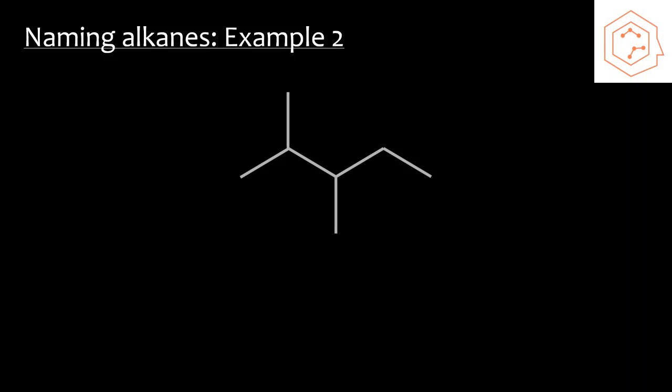I've also included an example where we now must consider the alkyl groups. The first thing we need to do is identify the parent chain. We have to be careful here because there is more than one possibility, but when you count the number of carbons, you're going to find that the parent chain has five carbons in it, so we're going to use the prefix pent. Next, we're going to want to identify the substituent groups. Here we have two methyl groups, which are alkyl groups that I previously mentioned, and since there are two of the same group, we're going to want to use the di prefix in our IUPAC naming.